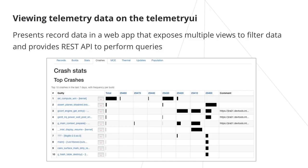The Telemetry UI web app presents record data with multiple views to filter the telemetry data. Records are analyzed and displayed in a developer-oriented format on the telemetry server. The Telemetry UI app allows you to search on a particular record, classification, machine ID, or other criteria, helping with quick issue identification and root cause analysis. The same filtering is available through the REST API. Preset views, such as the crashes view seen here, help you analyze the lifecycle of an issue and see in which build an issue presents itself.